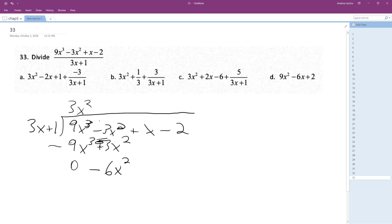So how many times does 3x go into negative 6x squared? Not minus 3x times, minus 2x times. Change the signs.